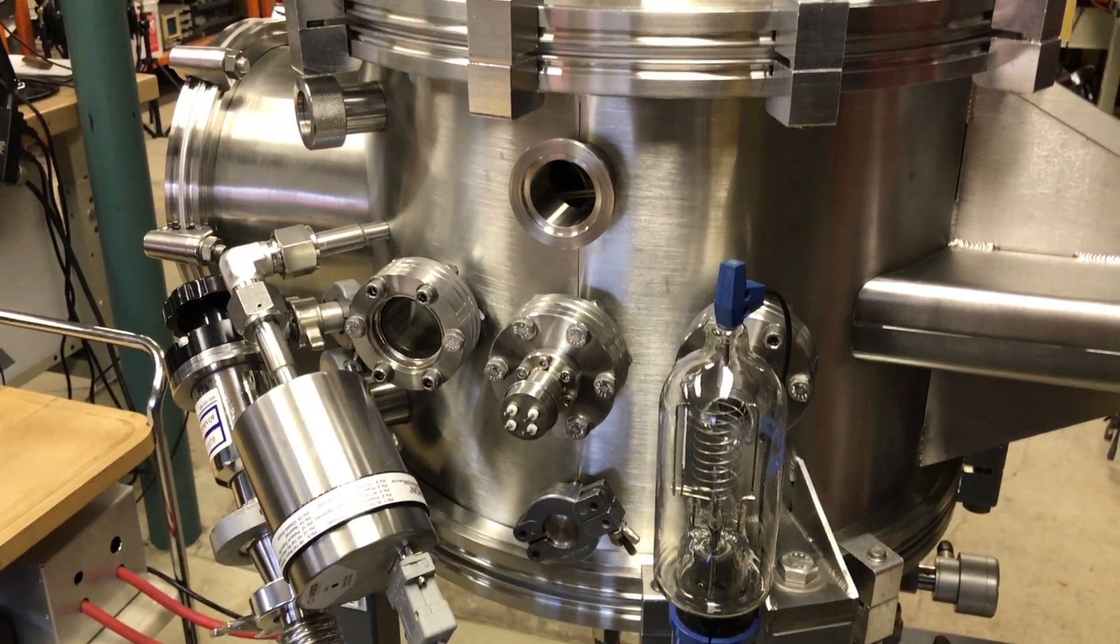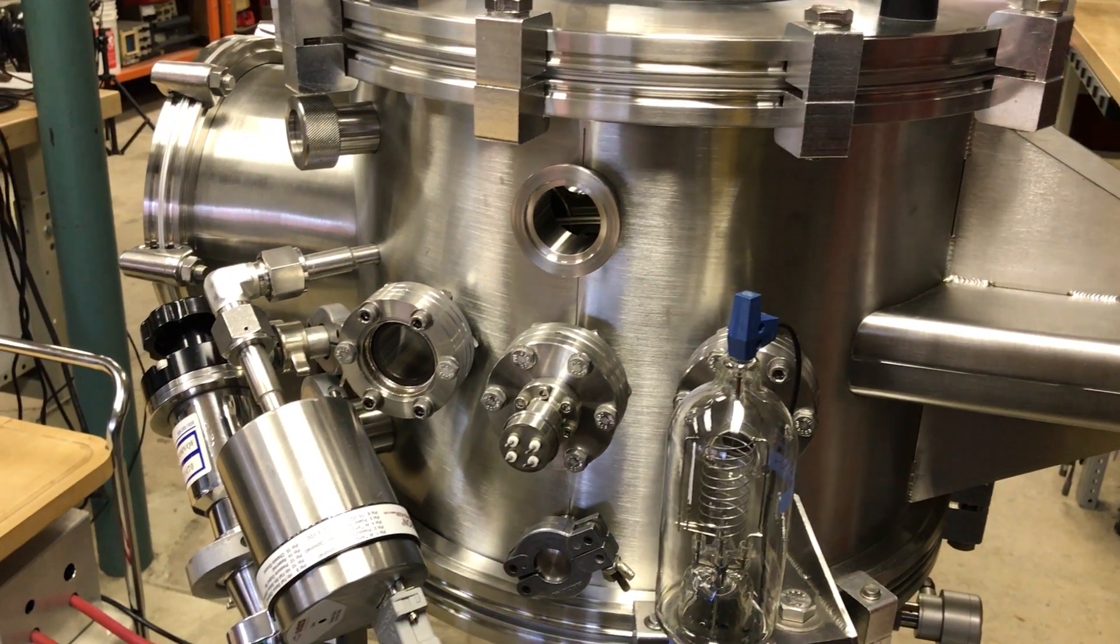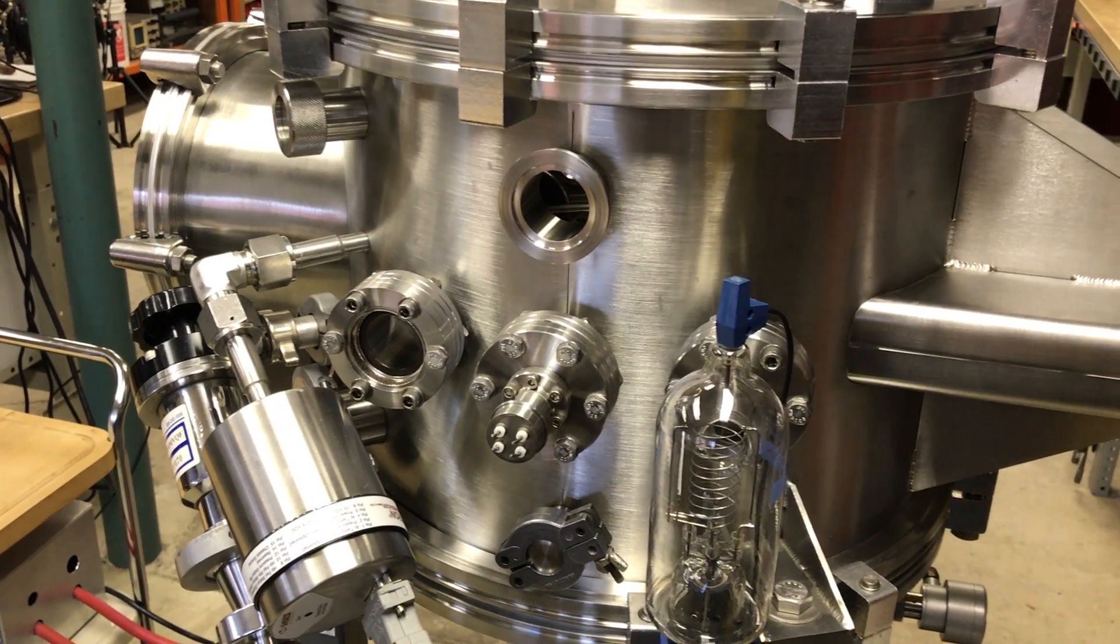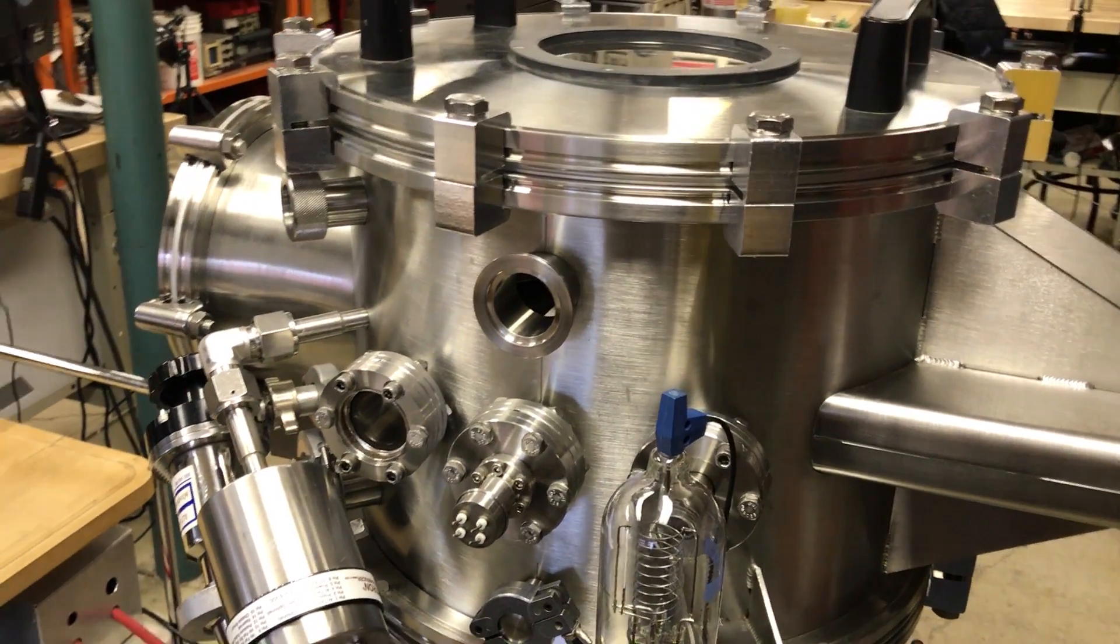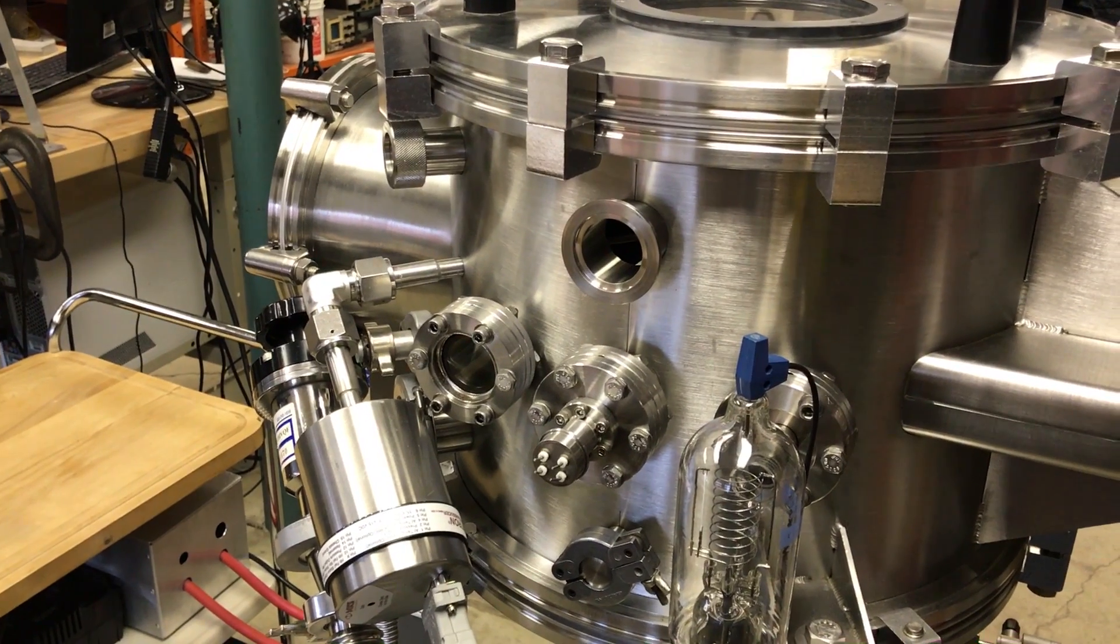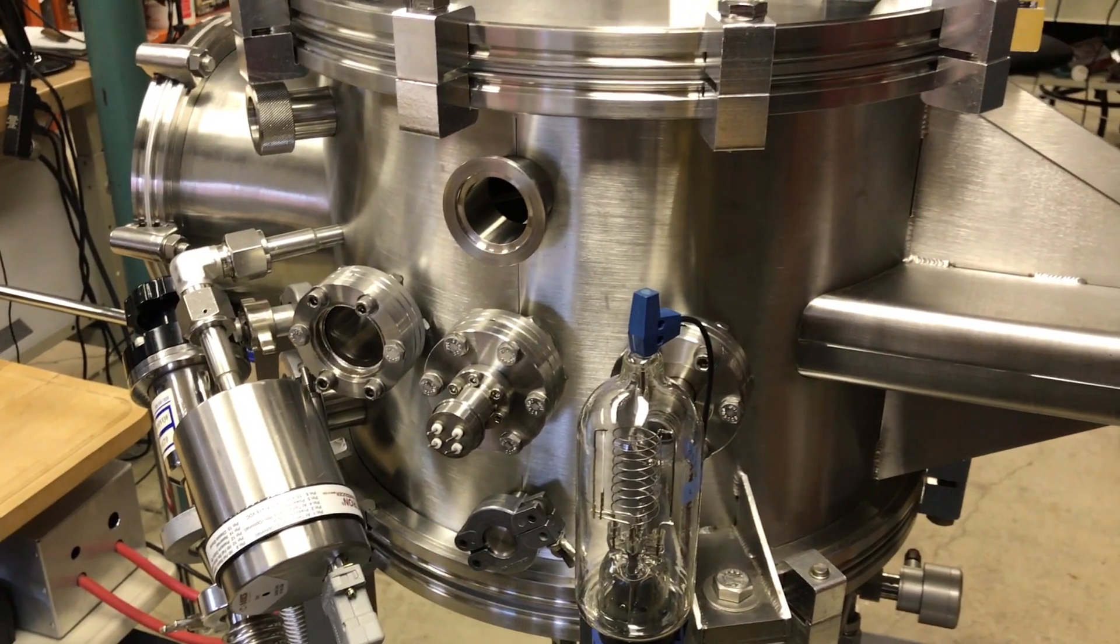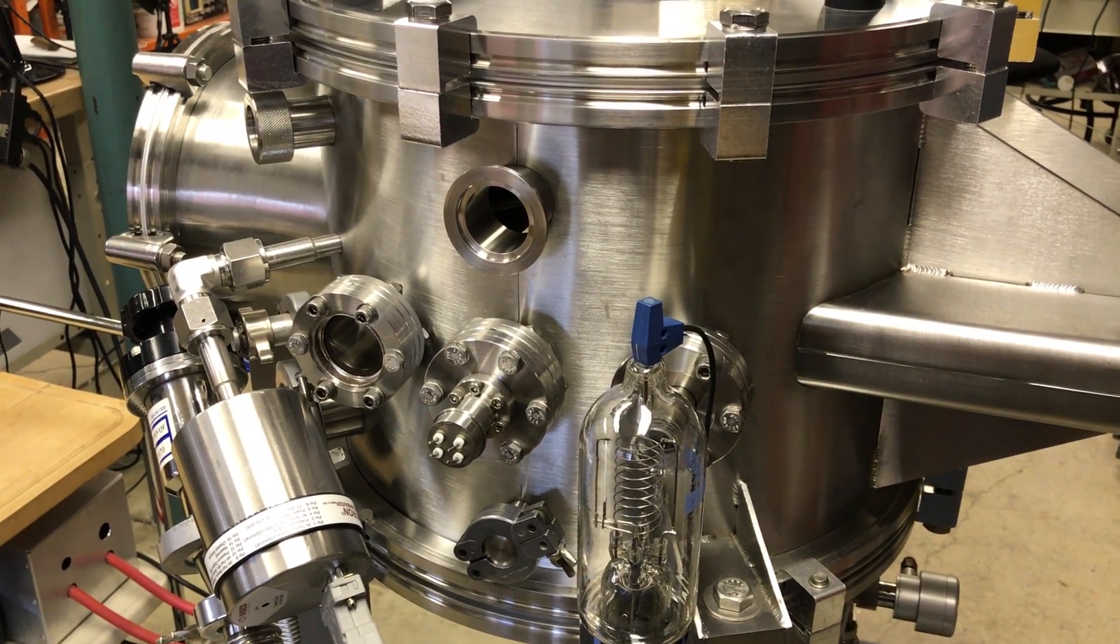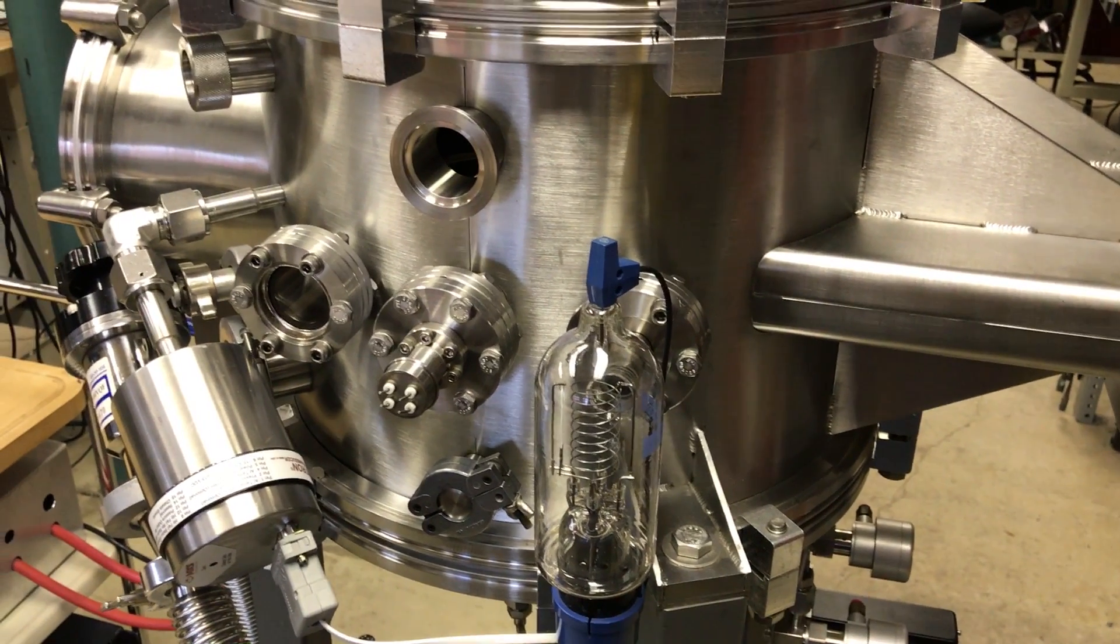Much like the vacuum pumps, it's important that you have multiple vacuum gauges as well. It's not as simple as you may think. So, I have three vacuum gauges on this chamber here, and they allow me to read anywhere from atmospheric, well, just below atmospheric pressure when I first turn my pump on, all the way down to ultra-high vacuum range.